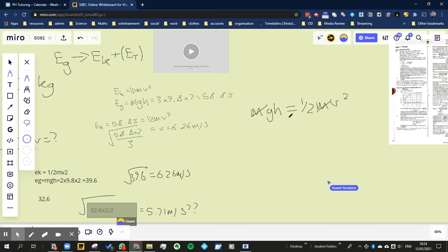So when we rearrange that, we have 2gh on the left is equal to velocity squared, and if I flip them around, the velocity is going to be always equal to the square root of 2 times the gravitational field strength multiplied by the height.